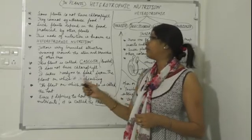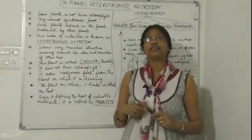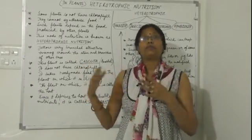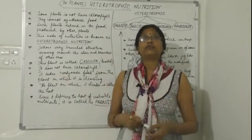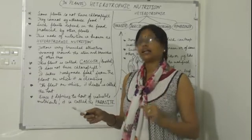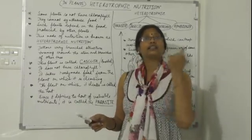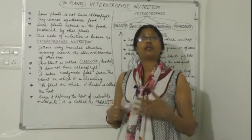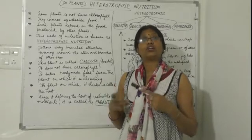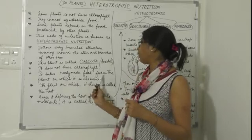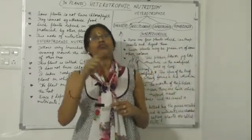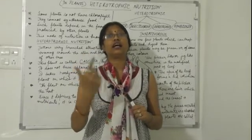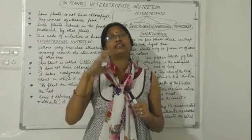Cuscuta is a yellow, wiry, branched structure which twines around the stems and branches of other plants. This plant does not have chlorophyll — obviously, since we are talking about heterotrophic nutrition. It takes ready-made food from the plant on which it is climbing.